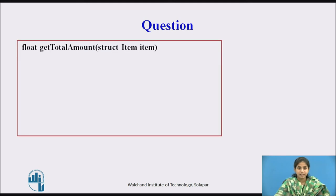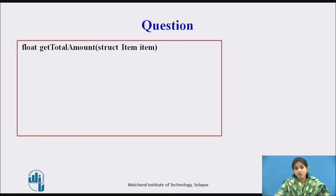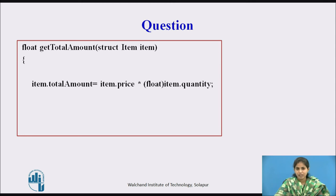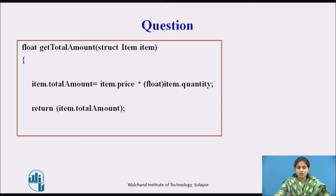Here we take the calculation for price of items. The return type of the function is float. The name of the function is get_total_amount. We pass a structure variable — here struct item — where item is the name of the structure and item is the structure variable. We calculate the sum using item.total_amount equal to item.price multiplied by item.quantity. After calculating the total amount we return that value to the calling function.